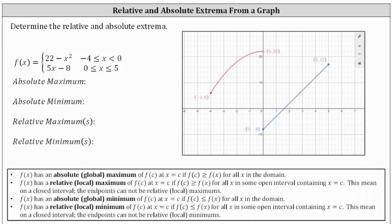We're asked to determine the relative and absolute extrema of the given piecewise defined function. We have f of x equals 22 minus x squared when x is greater than or equal to negative 4 and less than 0, which gives us the red piece of the graph. Notice how we have a closed point at x equals negative 4 and an open point at x equals 0.